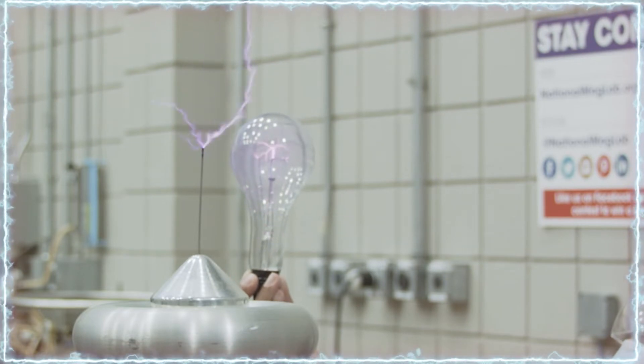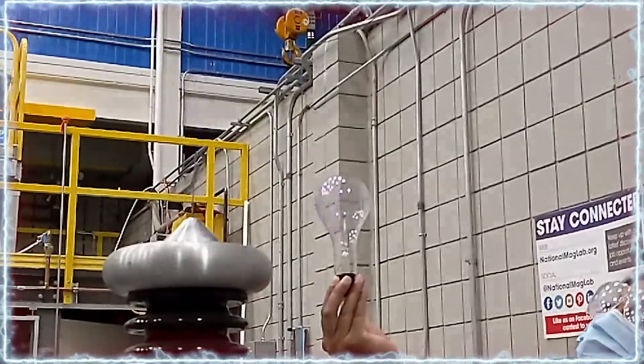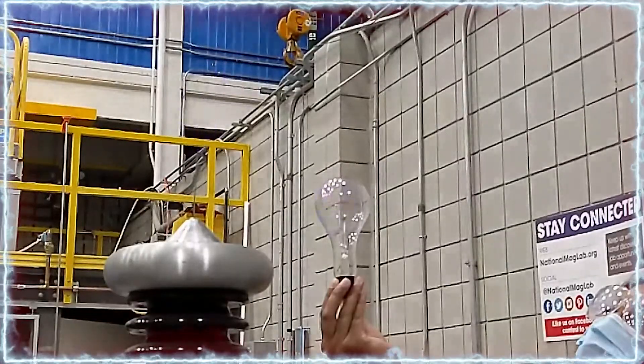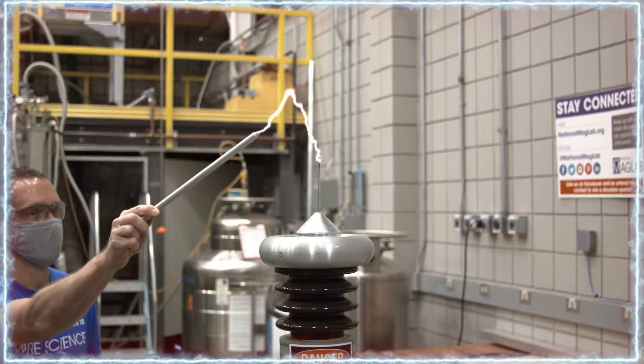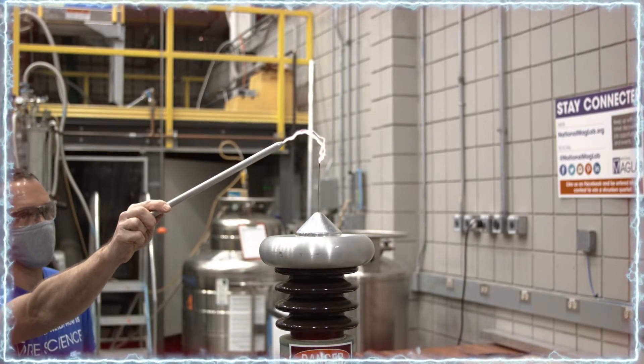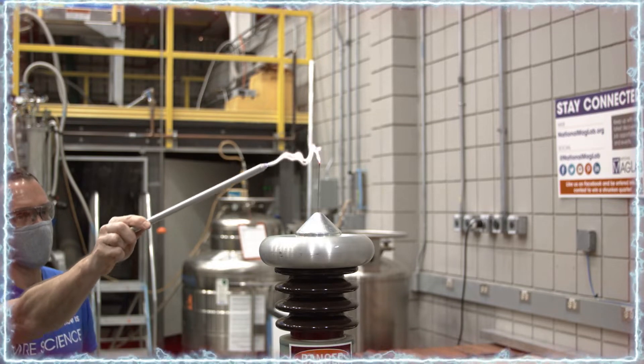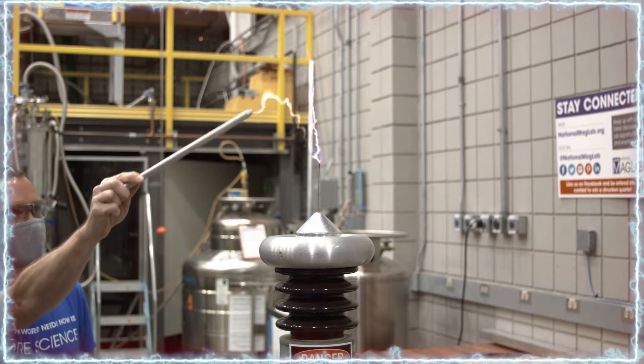The higher the frequency, the more the current tends to travel over the surface of conductors. Because of that, Dave can actually let the sparks from the Tesla coil jump to this metal rod without getting shocked because it does not penetrate into the nerves.